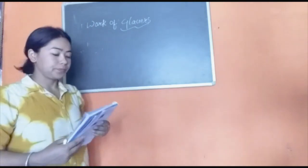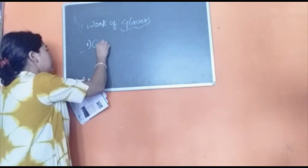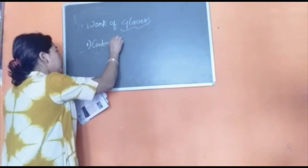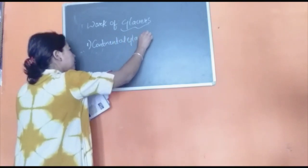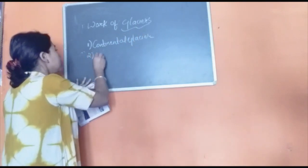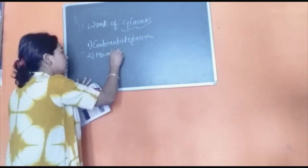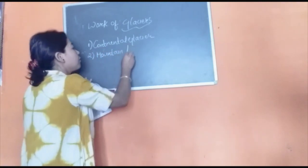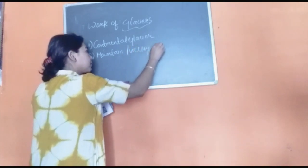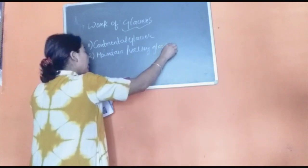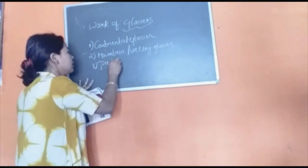There are three types of glaciers. Number one is continental glacier. Number two is mountain or valley glacier. And number three is piedmont glacier.